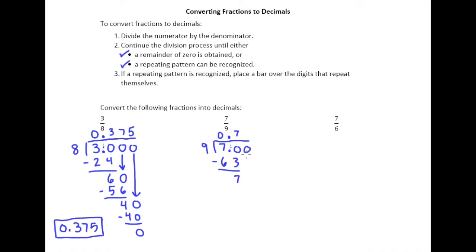We get a remainder of seven. So we'll add a zero, drop it down. Nine goes into 70 seven times. Seven times nine is 63. Remainder of seven. And hopefully at this point you can recognize this repeating pattern.